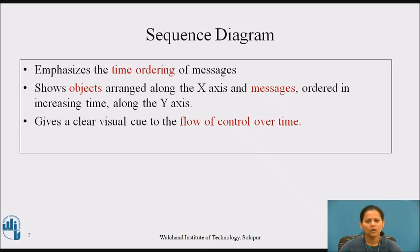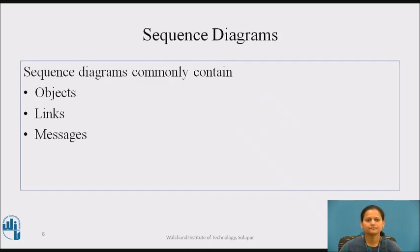Now, what distinguishes an interaction diagram from all other kinds of diagrams is particularly its basic contents. Sequence diagrams commonly contain objects, links and messages.